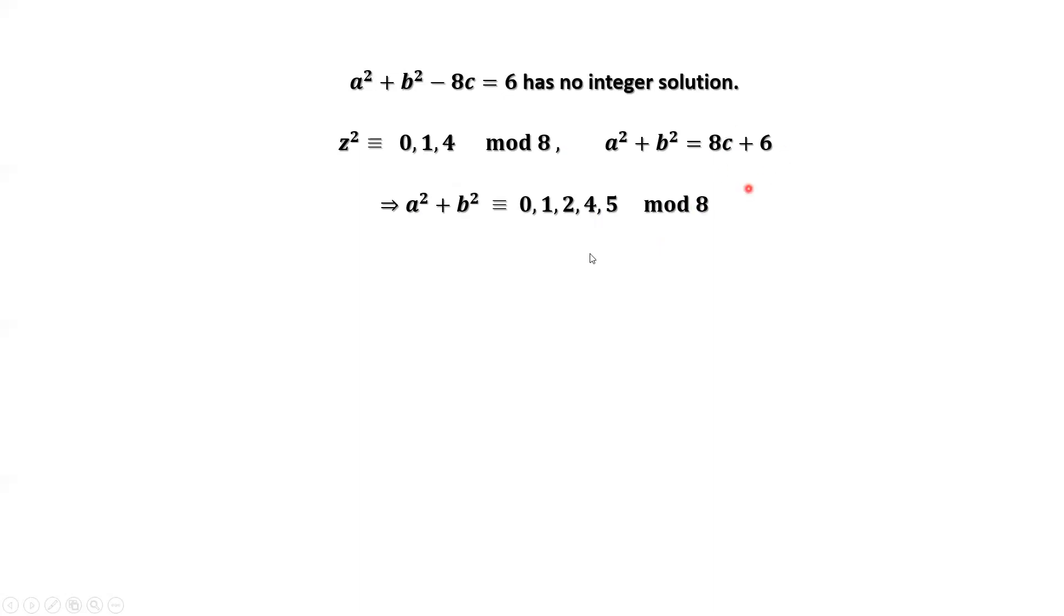Check the right-hand side: 8c plus 6 divided by 8. The first part, 8c, is divisible by 8 because c is an integer. The remainder for the first part is 0, so 0 plus 6. The remainder for the right-hand side is 6. Comparing both sides, because they are equal, the right-hand side remainder divided by 8 is 6. The left-hand side, all possible remainders are here without 6. Because they are equal, this implies it is impossible. This is a contradiction.